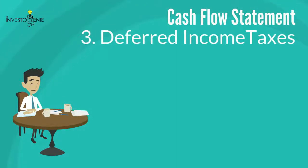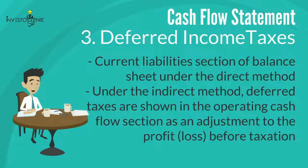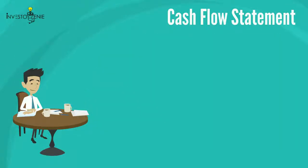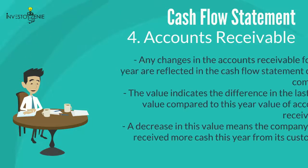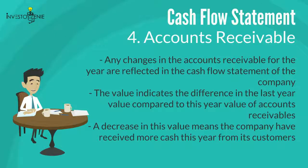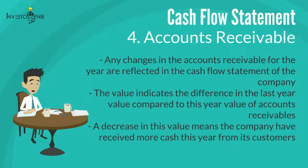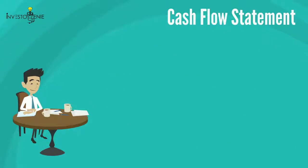Three: deferred income taxes. Under the direct method, deferred income taxes are shown in the current liabilities section of the balance sheet. Under the indirect method, deferred taxes are shown in the operating cash flow section as an adjustment to profit or loss before taxation. Four: accounts receivable — any changes in accounts receivable for the year are reflected in the cash flow statement. The value indicates the difference between last year's and this year's accounts receivable. A decrease in this value means the company received more cash from its customers this year.